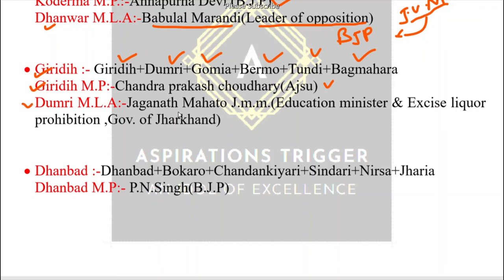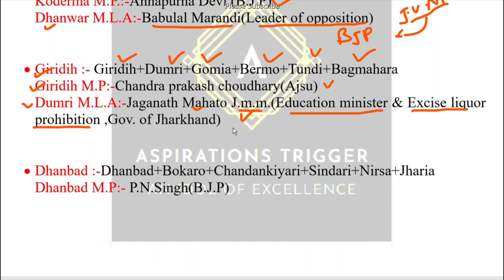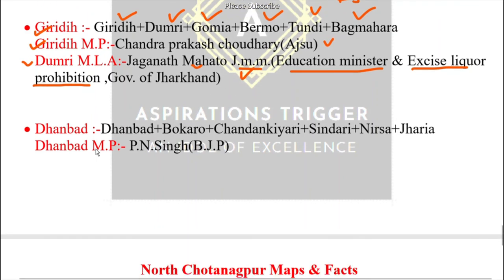One important Assembly constituency here is Dumri. The MLA from Dumri is Jagarnath Mahto, who belongs to JVM (Jharkhand Vikas Morcha).